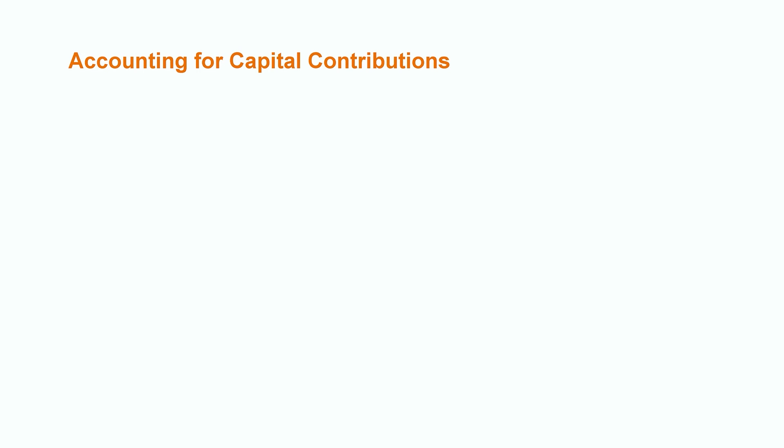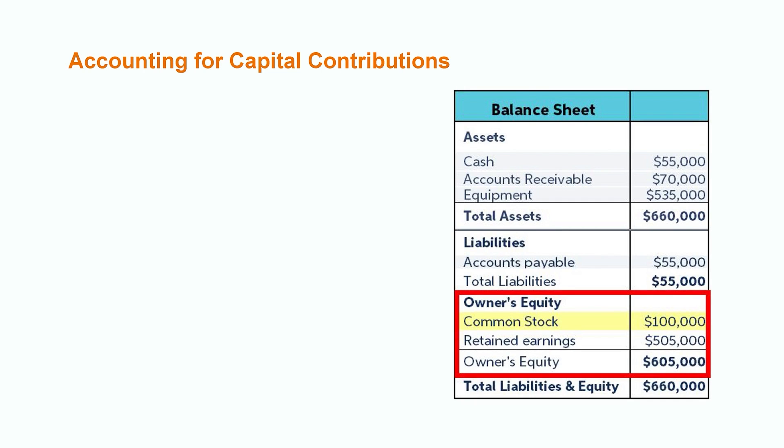Let's look at a couple of examples of how capital contributions are accounted for. Let's think about where we would see these contributions reported on a company's financial statements — the balance sheet. The value of capital contributions made to an organization will be reflected in the owner's equity section on the balance sheet. Earlier, we discussed an example of a company that issued 100 shares of common stock at a share price of $1,000 each, and we can see this $100,000 capital contribution reported on the highlighted line on this balance sheet.